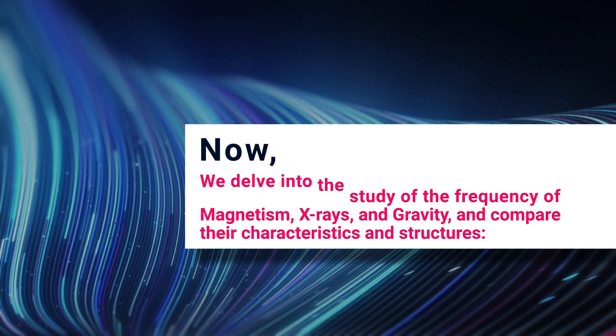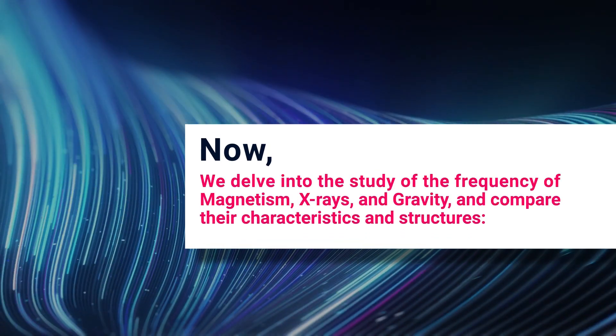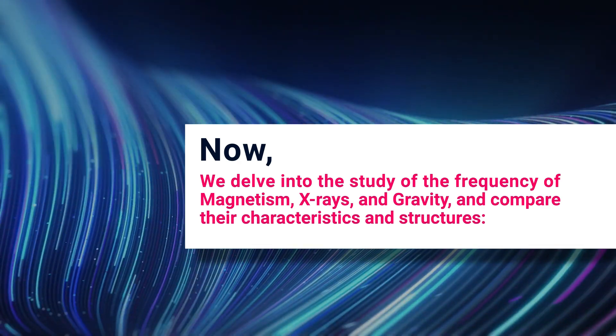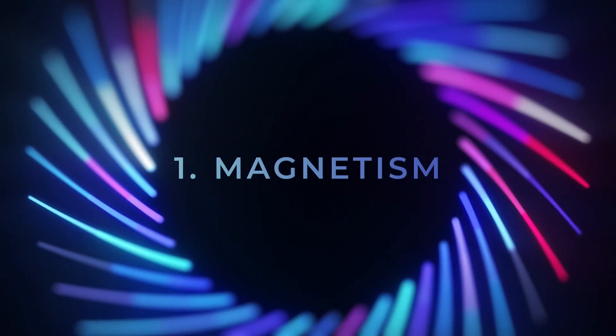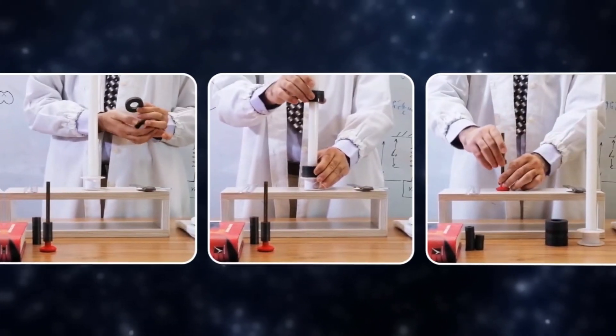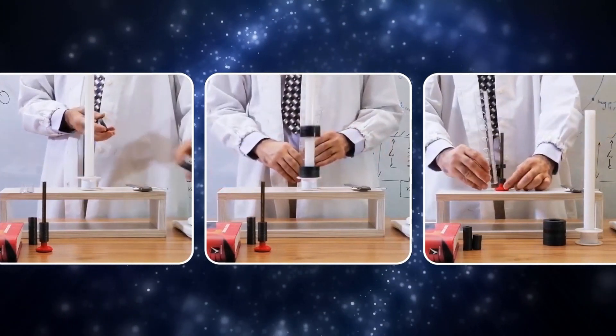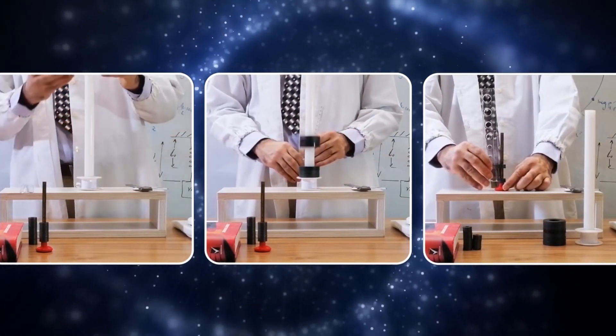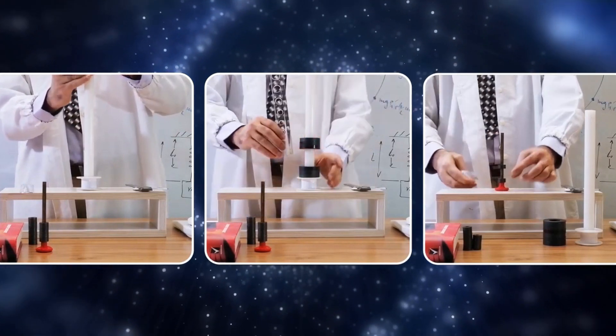Now, we delve into the study of the frequency of magnetism, X-rays, and gravity, and compare their characteristics and structures. In the previous articles, we obtained the frequency of magnetic waves in ordinary magnets by experiment. And now, we proceed to present the calculation process and the resulting outcomes.